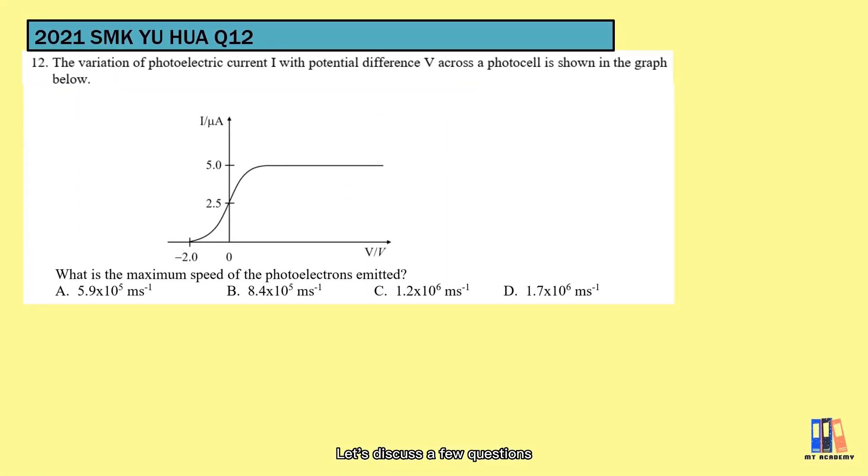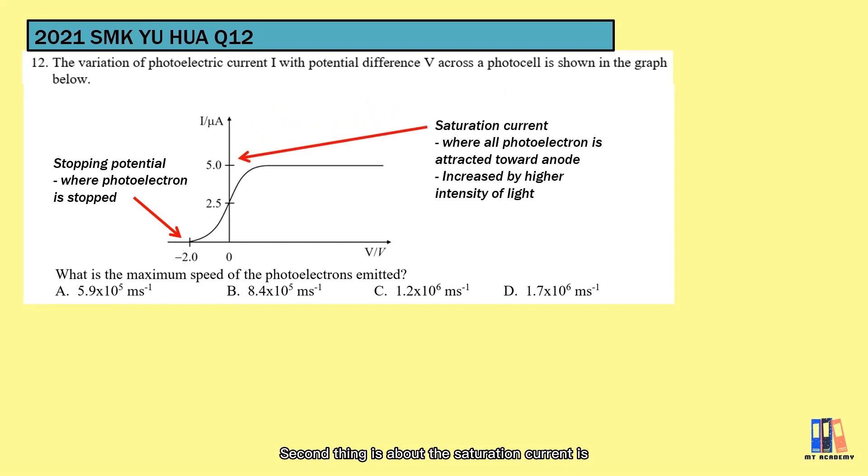So let's discuss a few questions. First is from SMK Yuhua in 2021. This is one of the graphs which shows the variation of photocurrent and potential difference applied. Two things you can analyze. First is on the negative x-axis which is when the reverse potential is applied to reduce the kinetic energy of electron. When the current is zero, the reverse potential is the stopping potential that is required to completely stop the emission of photoelectron. Second thing is about the saturation current which is when the current doesn't increase further when we increase the voltage. This is because we have all the photoelectron released are brought to the positive terminal. To increase the saturation current, we can increase the light intensity which can release more electrons from the metal.